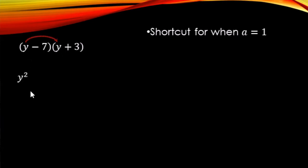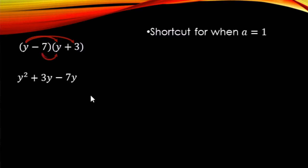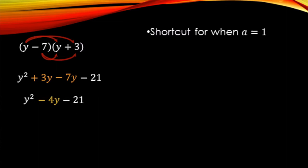We're going to go ahead and multiply these two binomials together. So we're doing y times y — y squared — and then y times 3 is 3y. Now the negative 7 times y gives us minus 7y, and then negative 7 times positive 3 is going to be minus 21. We still need to add like terms: y squared, then 3y minus 7y makes negative 4y, and then the constant term minus 21.